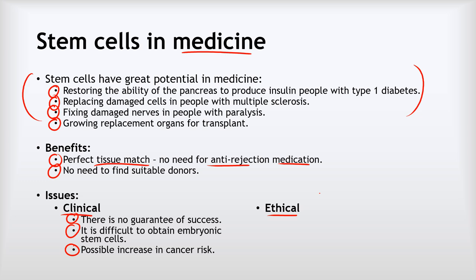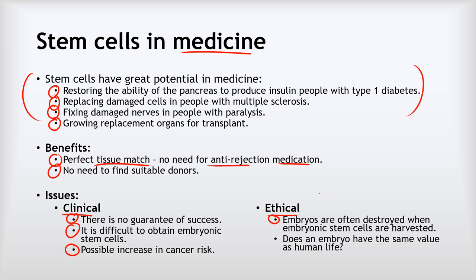There are also ethical issues. Harvesting embryonic stem cells often means the embryo is destroyed in the process. This raises the question: does an embryo have the same value as a human life? Some people say yes — arguing the soul enters at conception — while others view early embryos as a ball of cells with no ability to suffer. These are genuinely big ethical questions.